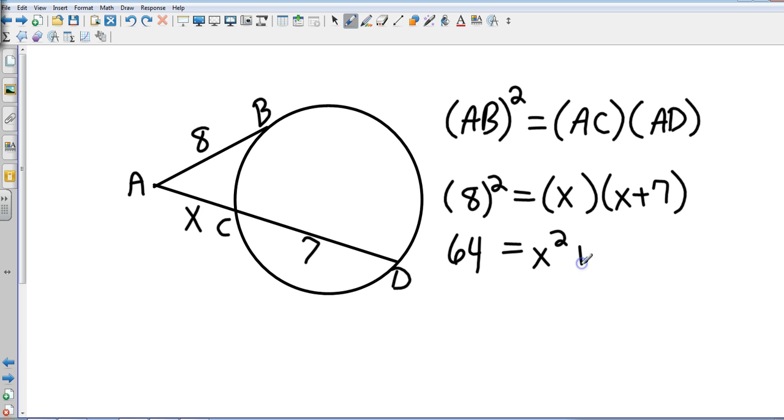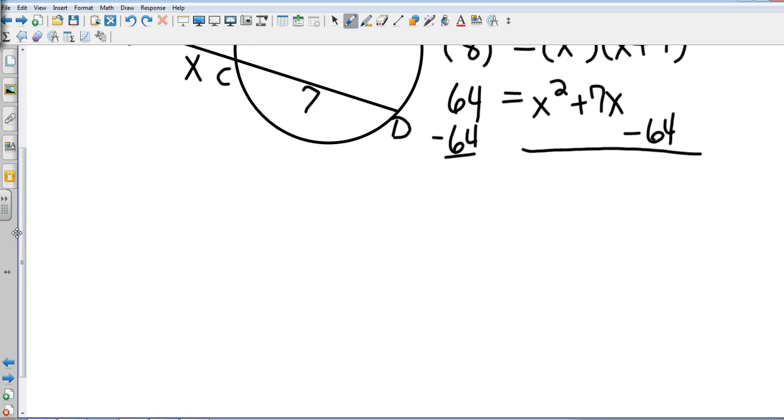I'm going to subtract that 64 from both sides, and so now I have X squared plus 7X minus 64.